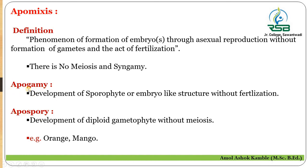In apogamy, there is development of the sporophyte or embryo-like structure without the process of fertilization. In apospory, there is development of the diploid gametophyte without meiosis. Orange and mango are examples of apospory.